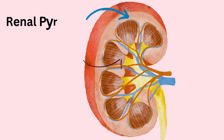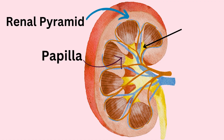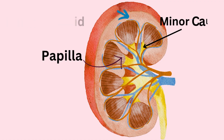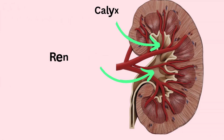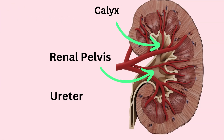The narrow part of the renal pyramids, called the papilla, is connected with branches of minor and major calyces. These are the areas from where urine is collected from the papillae. These calyces join to form the renal pelvis, which connects to the ureter to carry urine to the urinary bladder.